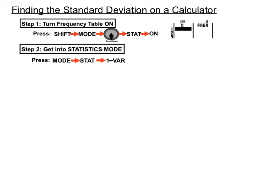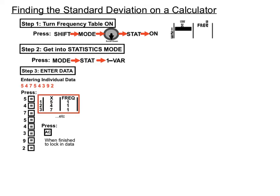Step 2 is to get into the statistics mode itself by pressing MODE, STAT and 1-VAR is the correct section we want to be in. We'll enter the individual data by pressing in the data score itself and then equals each time when we want to enter each of those values until we're done. When we are done, we'll press AC to lock that in.